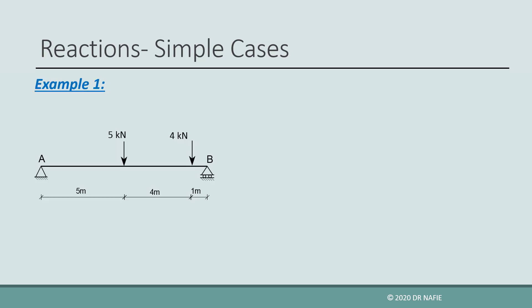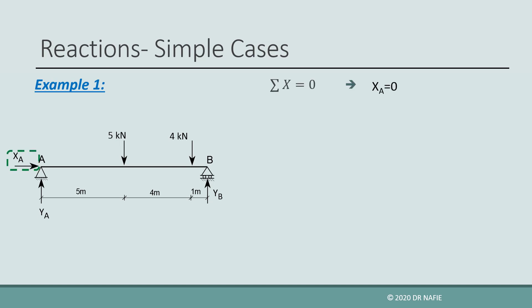Let us look at an example. For the shown beam, we need to evaluate the reactions. The first step is to specify the reactions. We have two supports: a hinged support at A with two reactions, XA and YA, and a roller support at B with one reaction, YB. To evaluate these three reactions, we need three equilibrium equations. Applying sigma x equals zero, we only have one reaction in the horizontal direction, XA, and no forces. So XA equals zero.